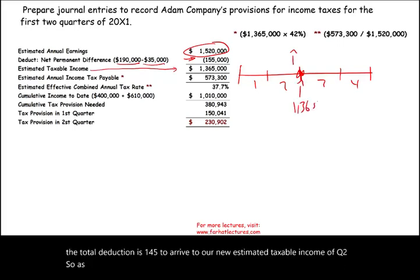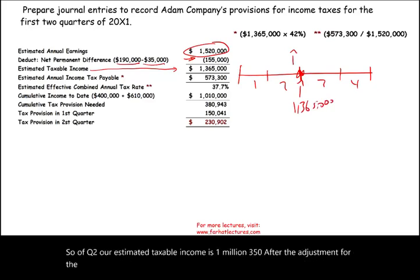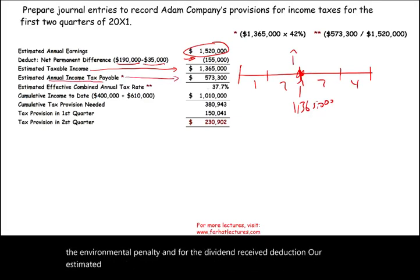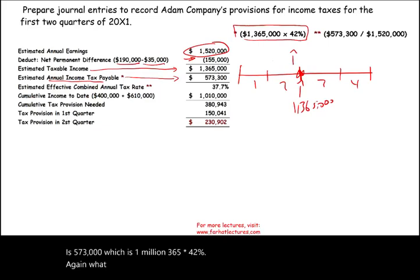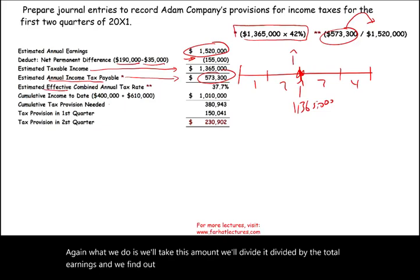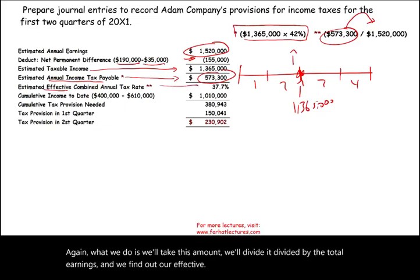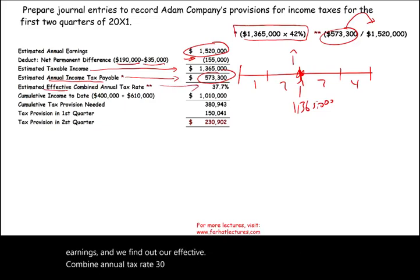As of Q2, our estimated taxable income is one million three hundred and sixty-five thousand after the adjustments for the environmental penalty and the dividend received deduction. Our estimated annual tax is five hundred seventy-three thousand, which is one million three hundred and sixty-five thousand times forty-two percent. Dividing by total earnings gives us an effective combined annual tax rate of thirty-seven point seven percent as of the second quarter.